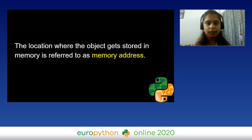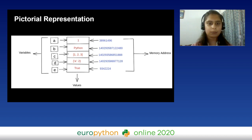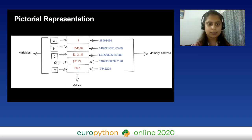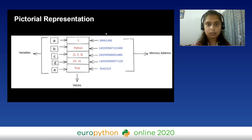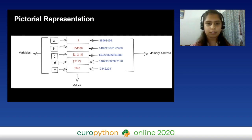The location where the object is stored is our memory address. Here is a pictorial representation: this bigger rectangle can be imagined as a memory block. All our objects are stored in this memory block, while variables are labels in Python. As these objects are stored in memory, they have memory addresses attached to them — all the blue items you see are basically the memory addresses. This diagram is for understanding purposes and not exactly how it works internally.